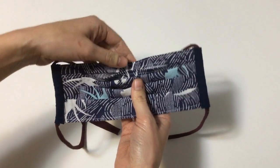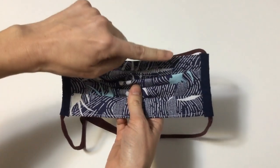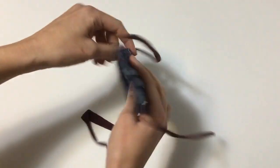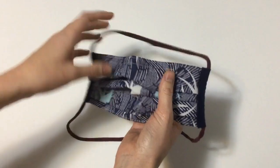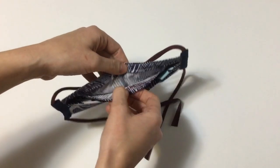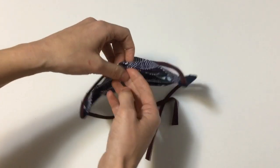In this mask there is an optional pocket for a wire which results in a nice snug custom fit. It's double layer quilting cotton and has a pouch for a filter which is also optional.